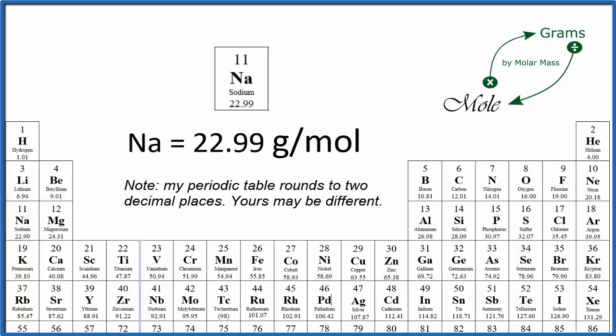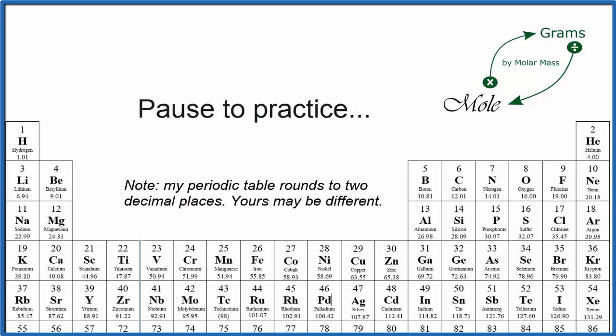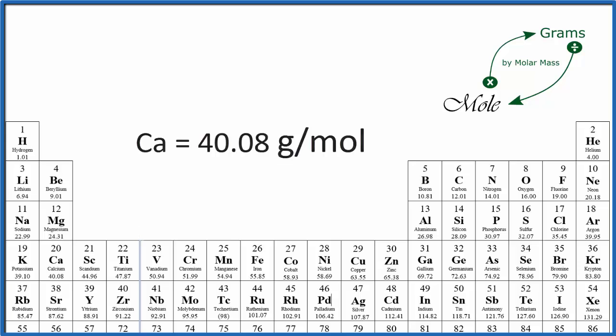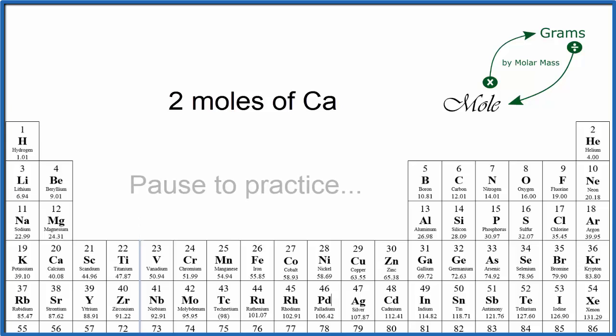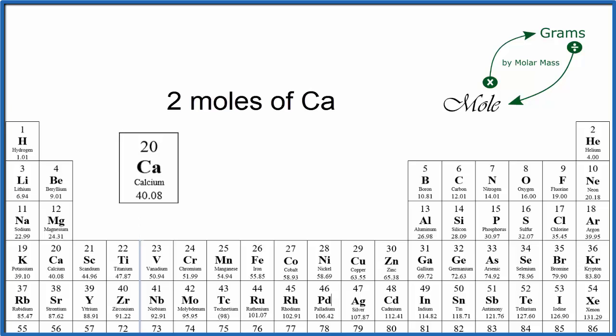Pause and find the molar mass for calcium. For calcium, one mole equals 40.08 grams, so its molar mass is 40.08 grams per mole. So if we had two moles of calcium, how many grams would that be? Well, one mole is 40.08, so two will just be double, 80.16 grams.